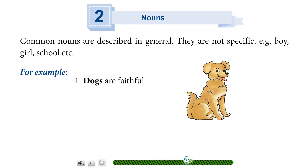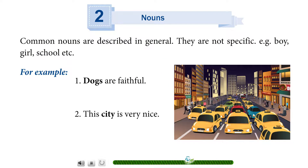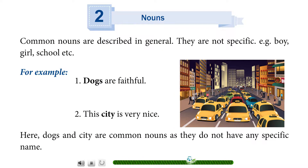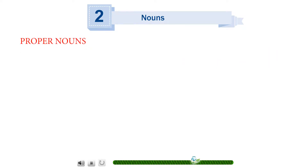For example: 1. Dogs are faithful. 2. The city is very nice. Here, 'dogs' and 'city' are common nouns as they do not have any specific name.